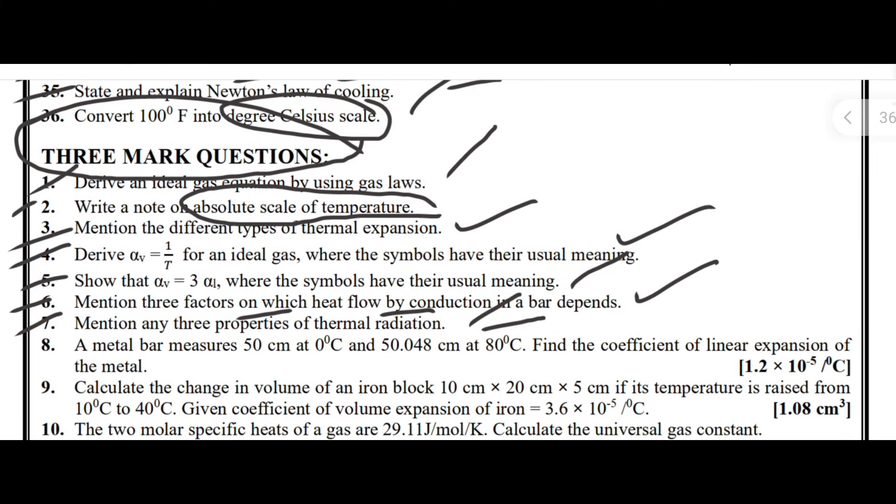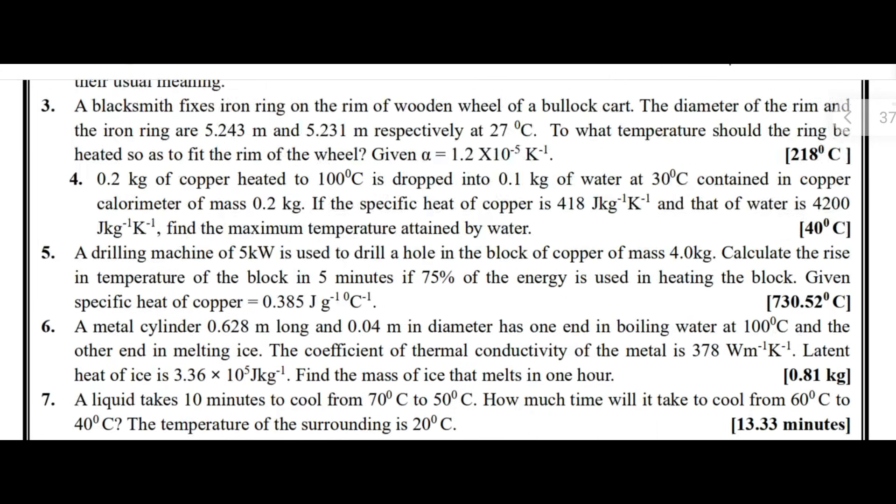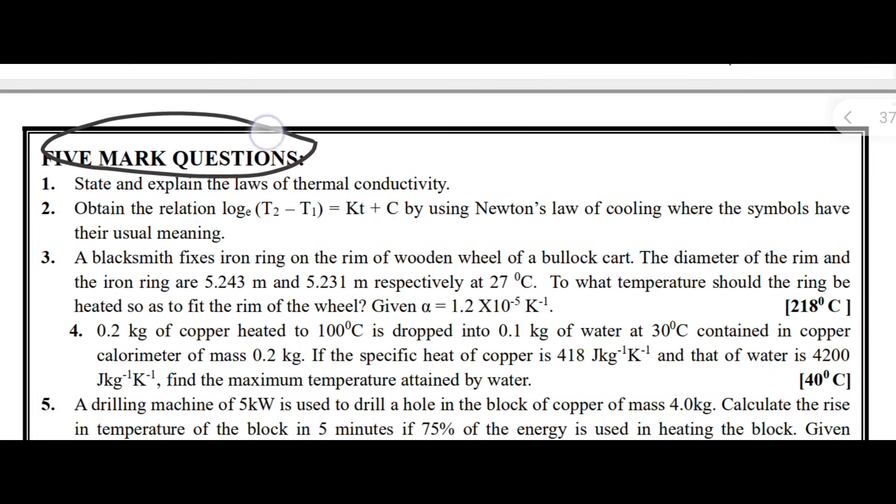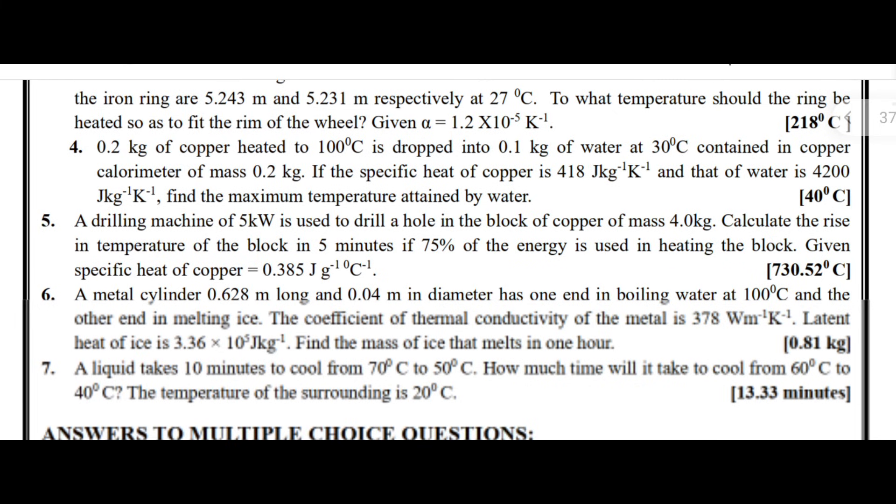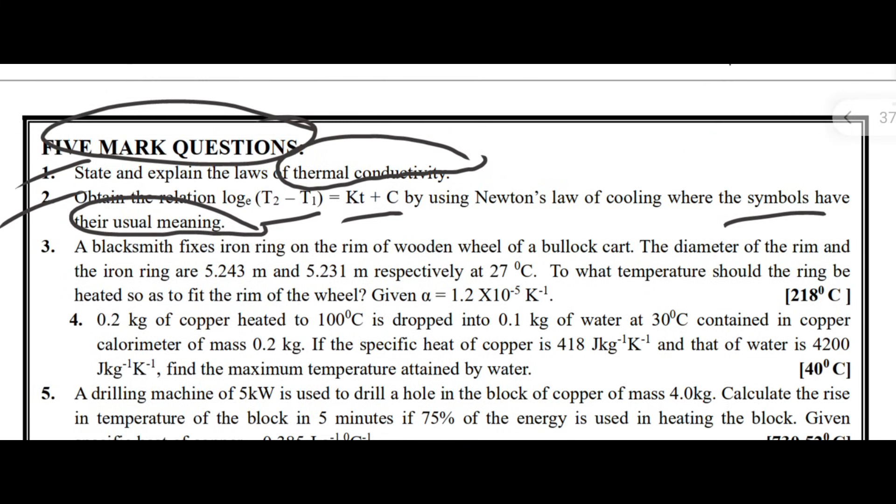Next, I will move to the five-mark type questions. First one, state and explain the laws of thermal conductivity. Next one, obtain the relation log E (T2 minus T1) equal to KT plus C by using Newton's law of cooling, where the symbols have their usual meaning. Remaining are five-mark problem questions. These two are the important derivations. If we prepare all these questions completely, then easily you will get good marks in your first PUC annual exam. So, wish you all the best for your upcoming exams. Thank you.